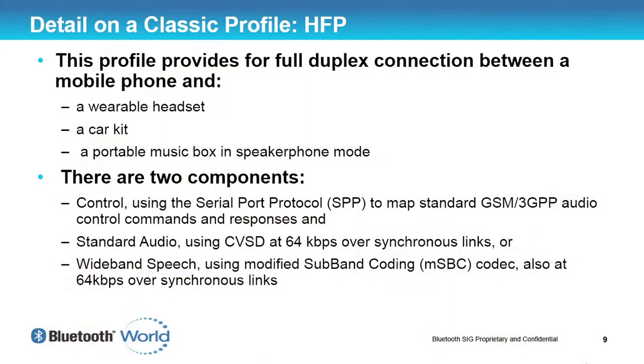When you want to dial a number, you use ATD — you send ATD with the number and it starts dialing. These are the same AT commands used in GSM. The audio channel is separate from the control channel and uses two different types of codecs. There's one codec called CVSD — continuously variable waveform — sampled at 64 kilobits per second, sent across the audio link over the synchronous connection-oriented channel.